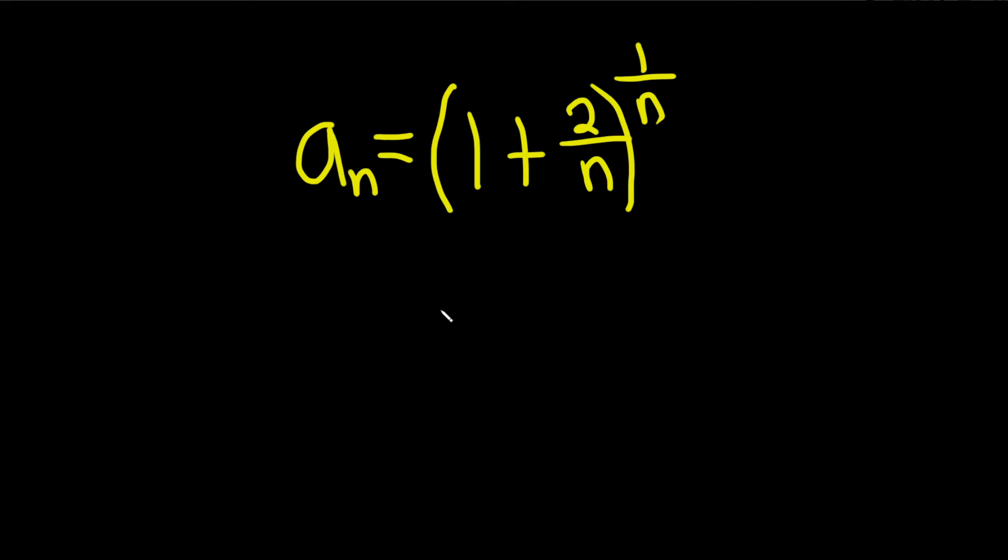Determine whether the sequence converges or diverges. So basically that means we're going to take the limit as n goes to infinity. If we get a number as an answer, we'll say it converges. If we don't, then we'll say it diverges.